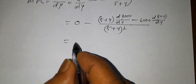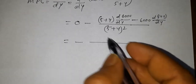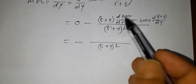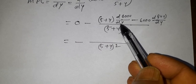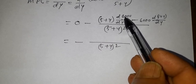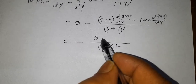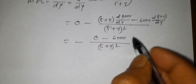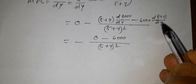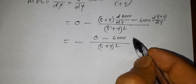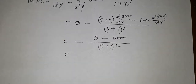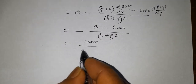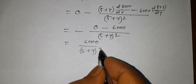This gives 0 minus (5 plus y) whole square. The derivative value of 6000 with respect to y is 0, so we get 0 minus 6000 times the derivative of (5 plus y) with respect to y, which is 1. Therefore we get 6000 divided by (5 plus y) whole square.